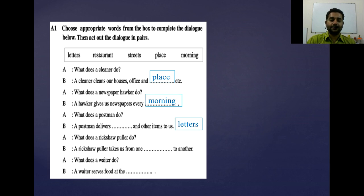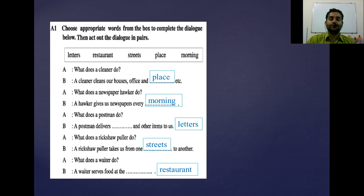A asks another question and B answers: 'A rickshaw puller takes us from one street to another.' Then B gives the next answer: 'A waiter serves food at the restaurant.' Now write down the answers, giving marks a, b, c, d, e in your CW copy.